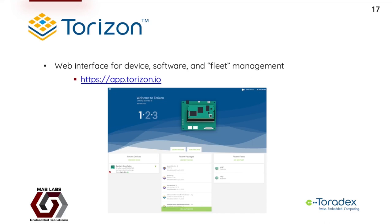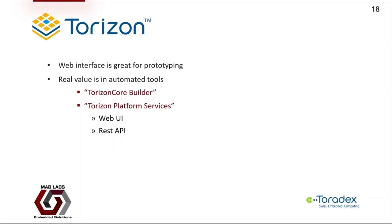Torizon offers a web interface for device, software, and fleet management, which can be accessed using this URL. This picture shows an example of my dashboard in Torizon's web interface. We can see I have one device, two fleets, and a couple of packages that we're going to go through in this webinar. While the web interface is great for prototyping and getting a feel for how to use Torizon, the real value of Torizon comes from the automated tools that are offered — for example, Torizon Core Builder, which allows customization of standard Torizon core images provided by Toradex, and Torizon Platform Services, which has a REST API in addition to a web UI, enabling more programmatic interaction, perfectly suited for CI/CD workflows.